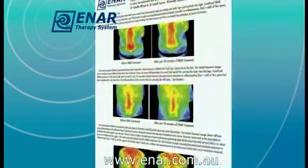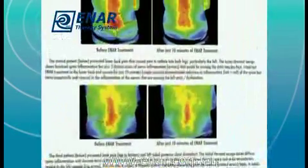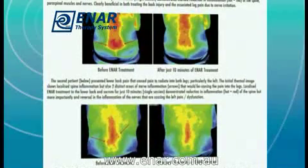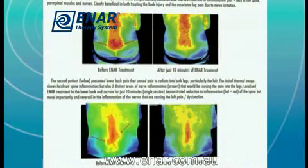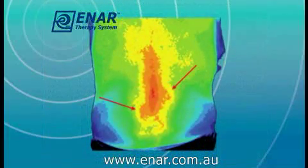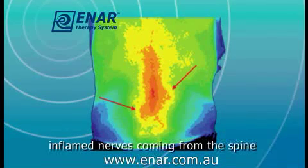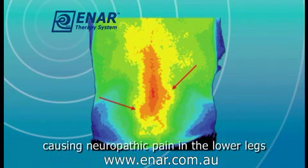The second study is a patient with lower back inflammation, not as marked as the first patient. What you can see quite clearly — and these patterns are arrowed on both the right and the left — is that nerves coming out of the inflamed spine also have inflammation. It is the inflammation of those nerves coming out of the spine that actually causes the neuropathic pain in the lower legs.